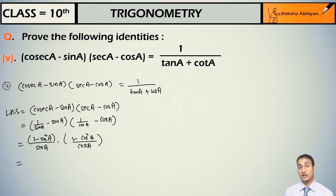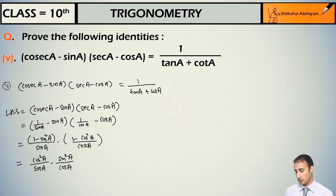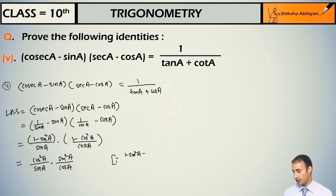Now, since you know that (1 - sin²(a)) is nothing but cos²(a), and (1 - cos²(a)) is nothing but sin²(a). So note here: since 1 - sin²(a) = cos²(a), and 1 - cos²(a) = sin²(a). So we get cos²(a) upon sin(a), multiplied by sin²(a) upon cos(a).